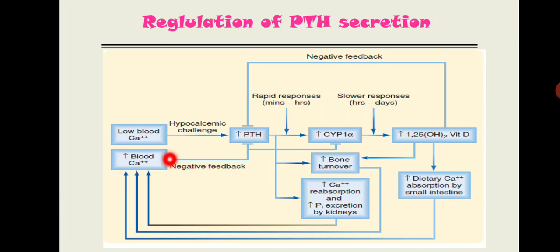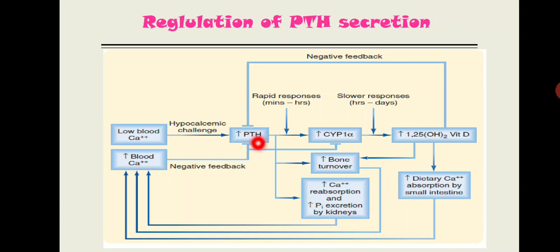The second stimulus is phosphate, which has the opposite relationship to calcium. Higher phosphate stimulates PTH secretion, while lower phosphate inhibits PTH secretion.